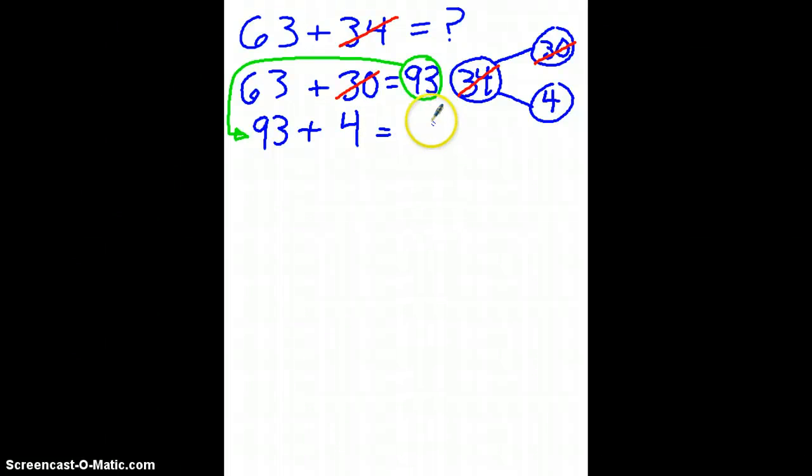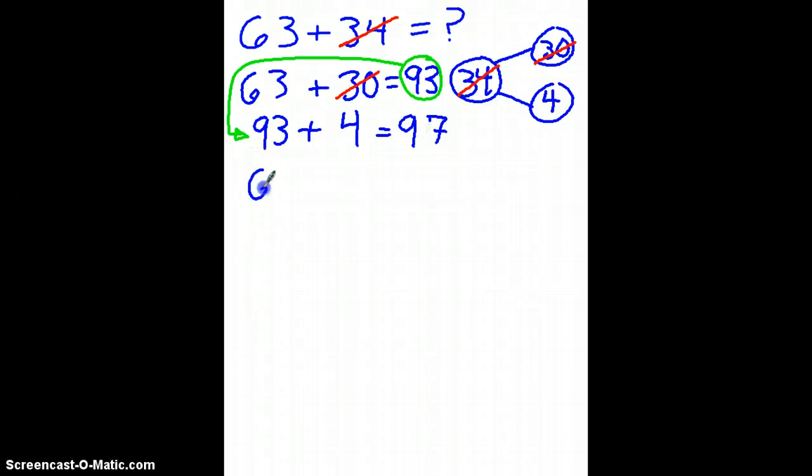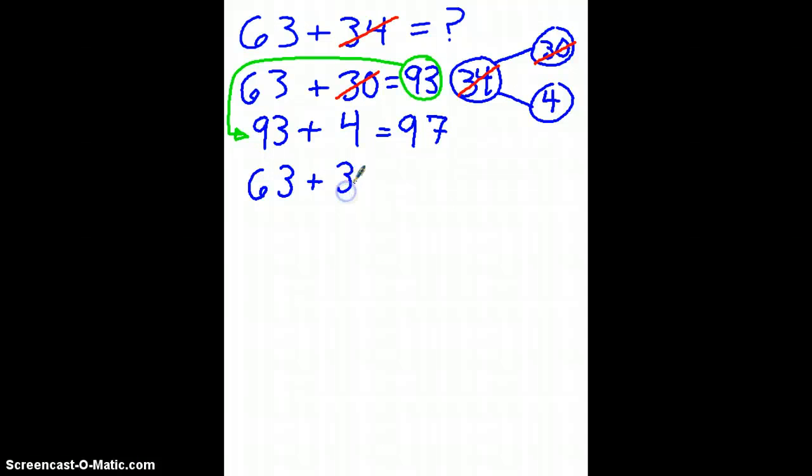4 ones plus 3 ones is 7 ones. 9 tens plus 0 tens is still 9 tens. So, I can say that 63 plus 34 is equal to 97.